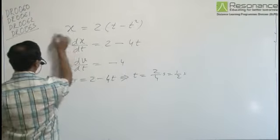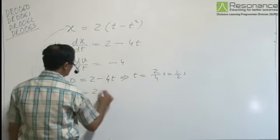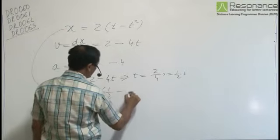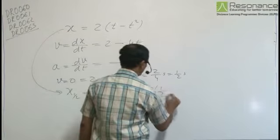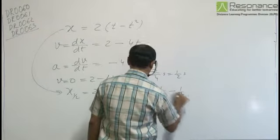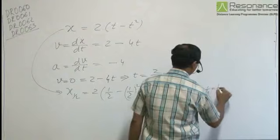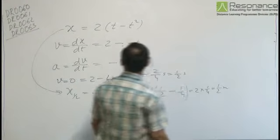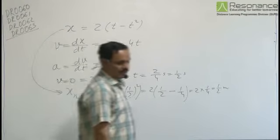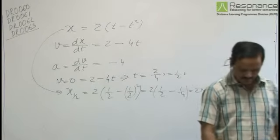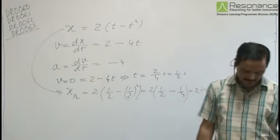Within that half second, the distance traveled is equal to 2×(0.5) - (0.5)² = 2×(0.5) - 0.25 = 2×(1/4) = 0.5 meters. So the maximum distance along the positive x-axis is half a meter. For the second question, C is the correct option — that is, half a meter.